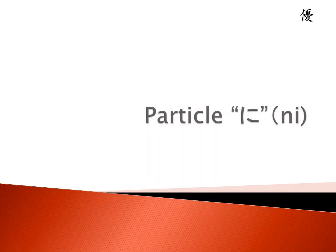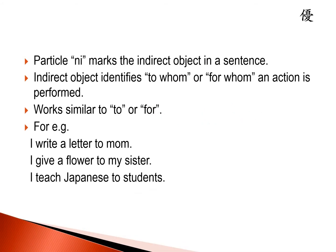Hello everyone. Today let's learn about particle ni. Particle ni has many different uses in Japanese grammar. Today we will learn two main ways in which particle ni can be used. The first is where ni marks the indirect object in a sentence. We have already learnt about direct objects and that wo is the direct object marker in Japanese. Today we will learn about indirect object.